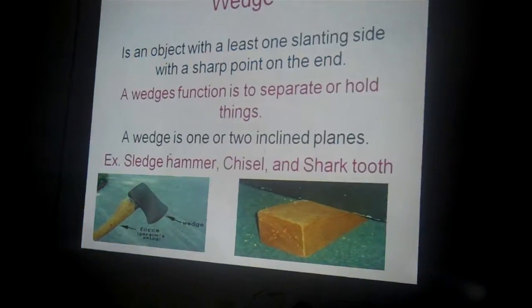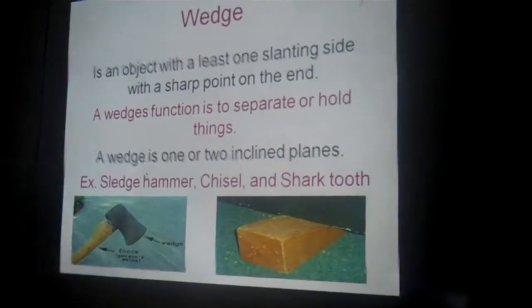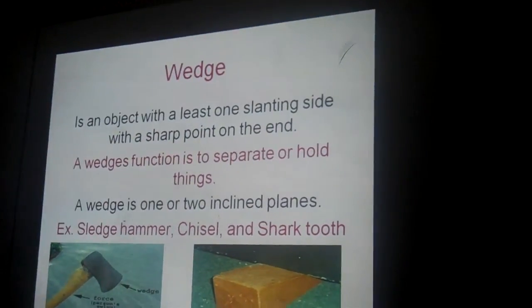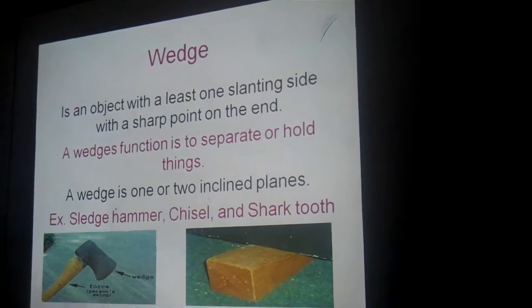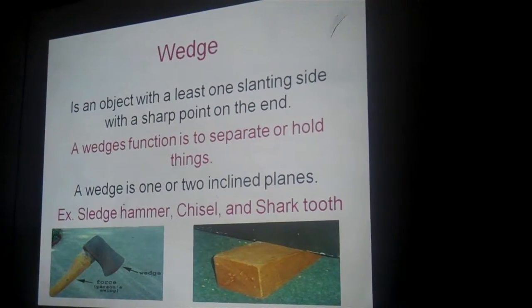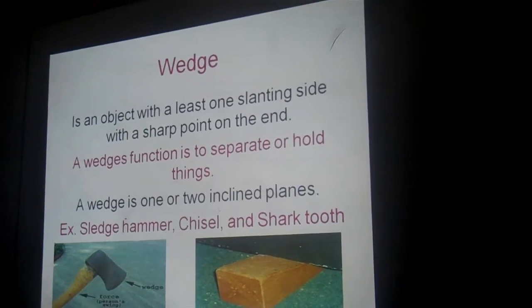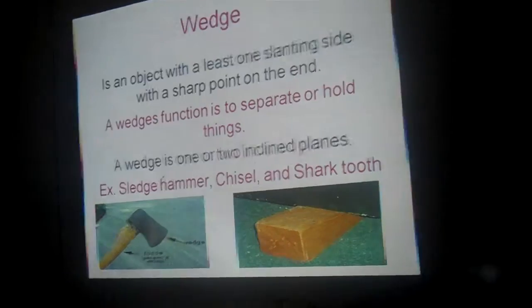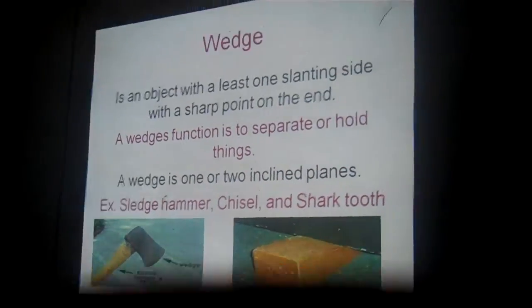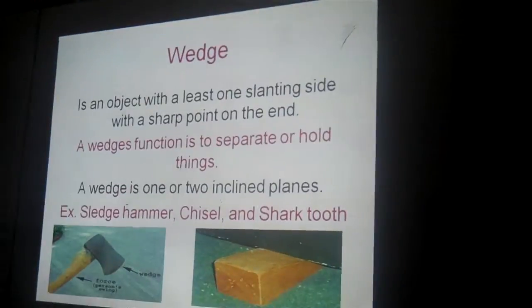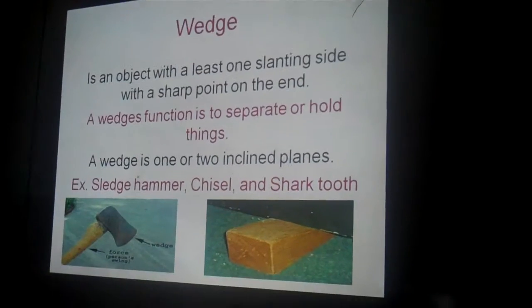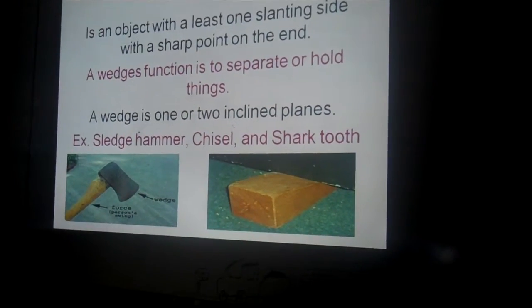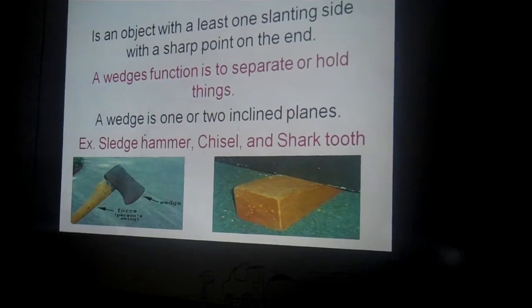A wedge is an object with at least one sloping side with a sharp point on the end. A wedge's function is to separate or hold planes. A wedge is two inclined planes. For example, a chisel, a shark tooth, and an axe.